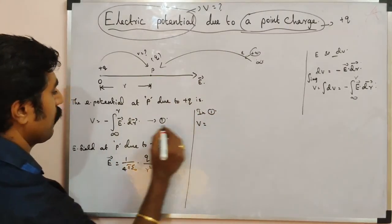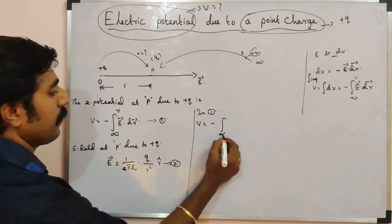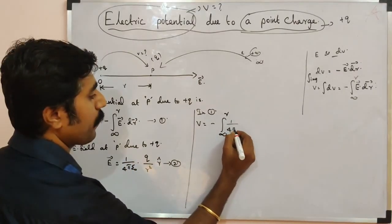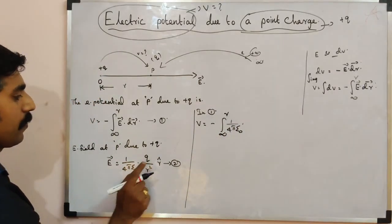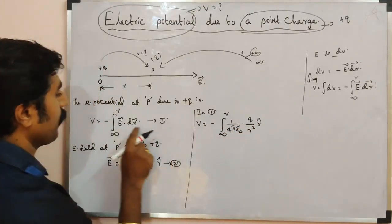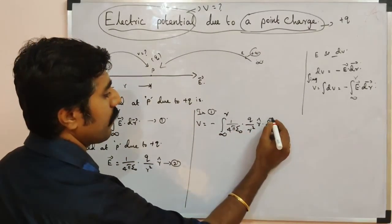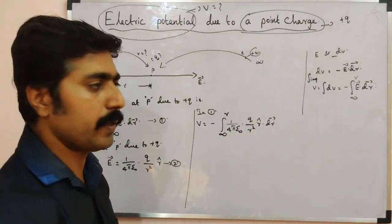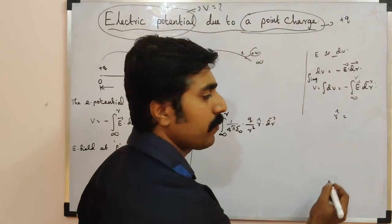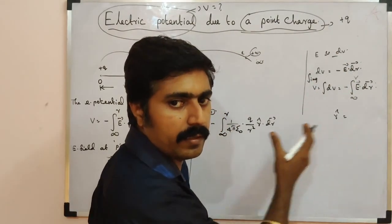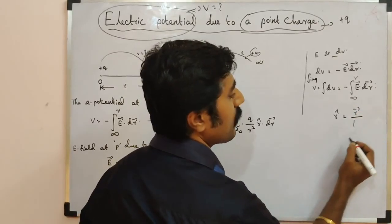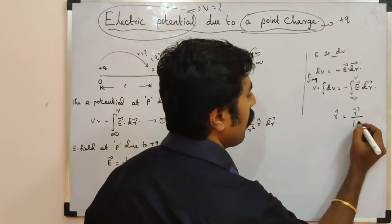V = −∫ from infinity to r of E⃗ · dR⃗. The electric field E⃗ = (1/4πε₀) · (Q/r²) · r̂. Now, r̂ is defined as r̂ = r⃗ / |r⃗|.